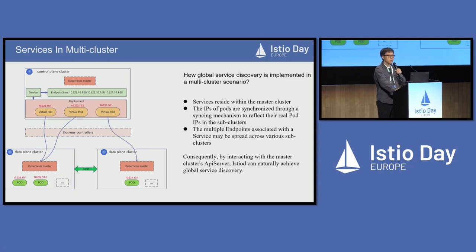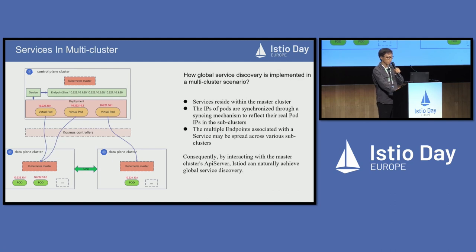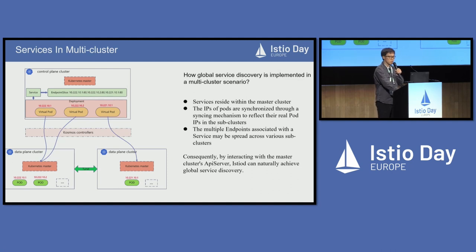Now, how global service is implemented in a multi-cluster scenario: services reside within the master cluster. In the master cluster, pods are virtual and their pod IPs are synchronized through a sync mechanism to reflect their real pod IPs in the sub-cluster. Therefore, the multiple endpoints associated with a service may be spread across different sub-clusters. Consequently, by interacting with the master cluster's API server, Istiod can naturally achieve global service discovery.